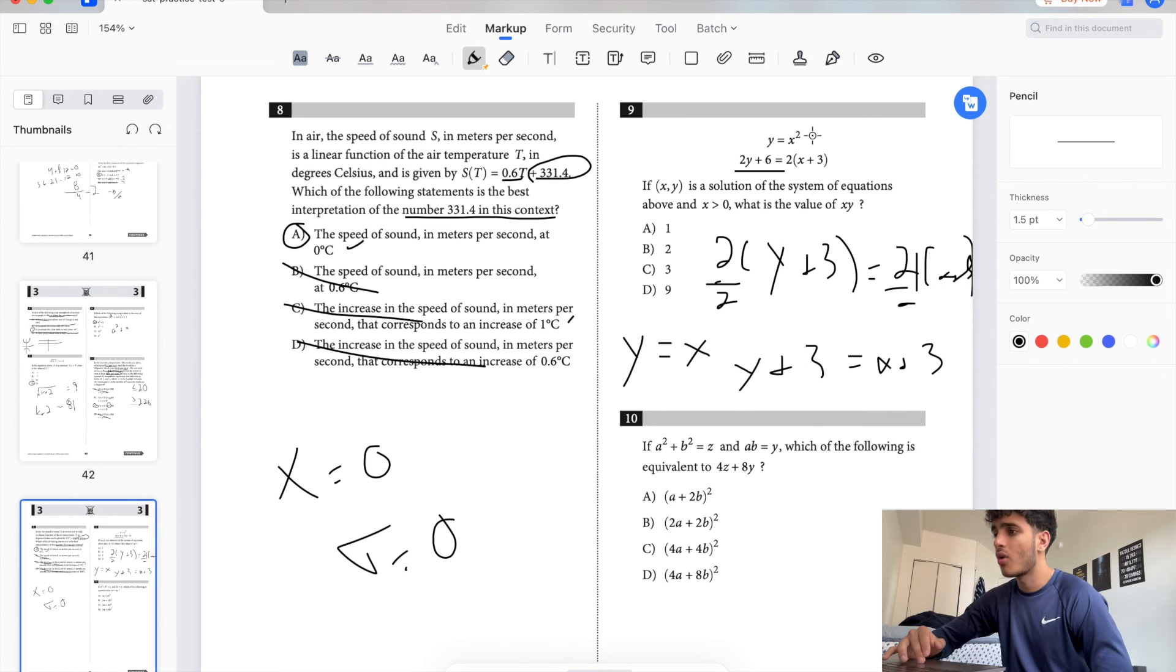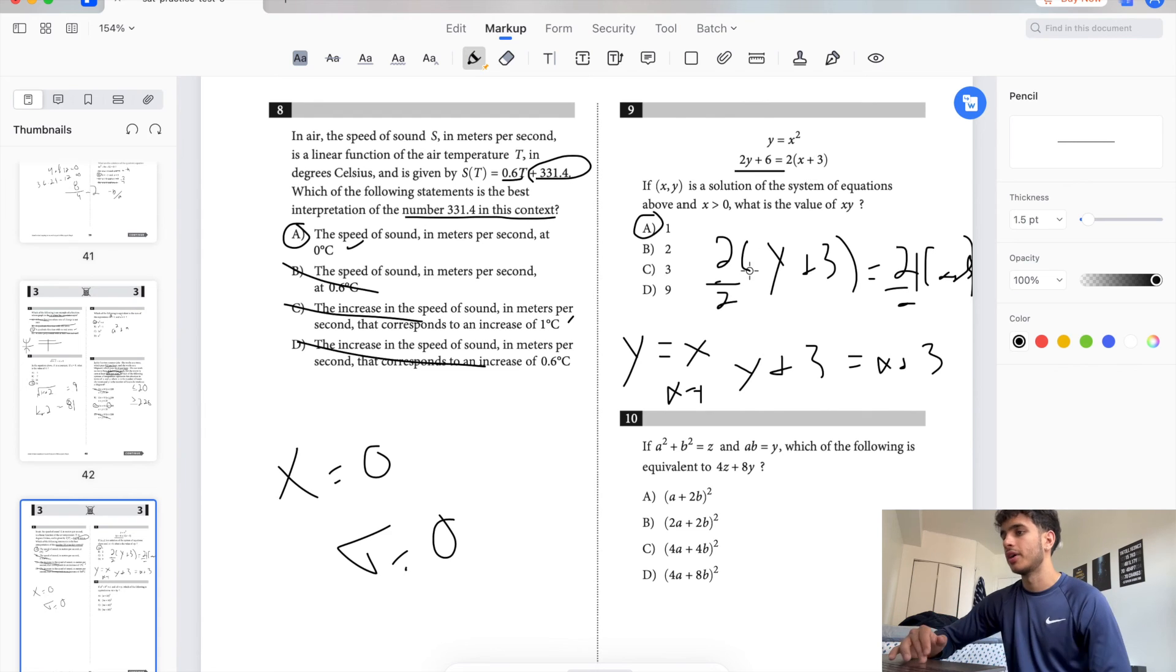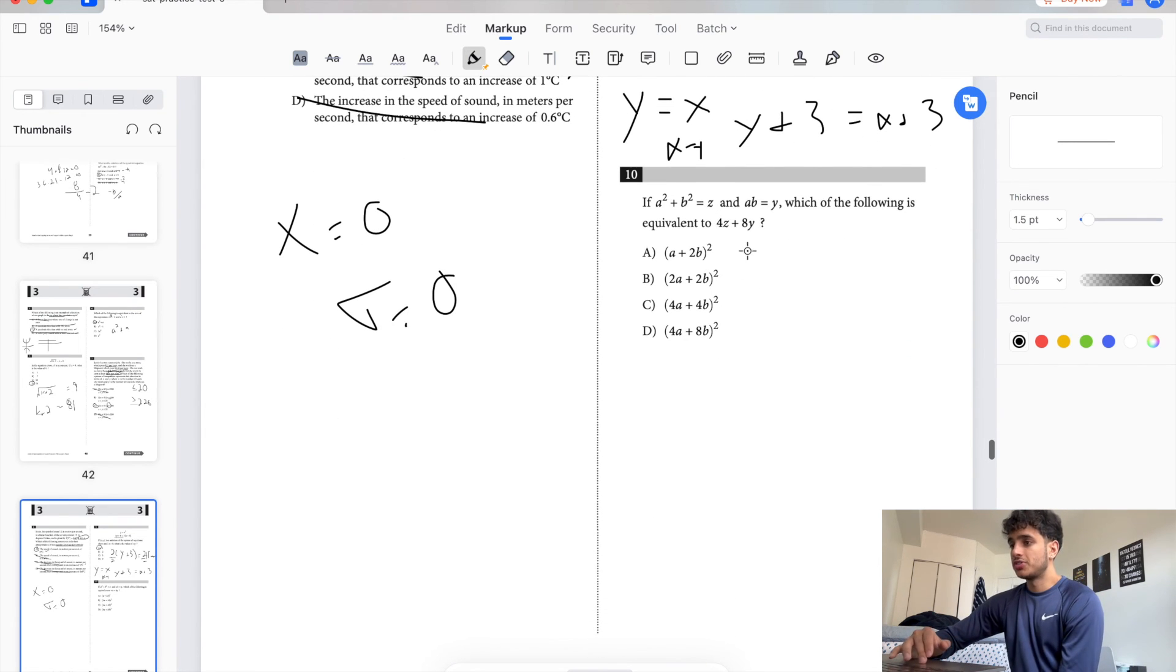So y equals x, and y equals x squared, that must mean that A is the answer. Because let's say x is 1. If you plug in 1 to here, you get y is 1 as well, and 1 times 1 is 1. Let's see if both are actually 1. So let's say if y and x are 1. Plug in 1 here, you get 2 plus 6 is 8. Plug in 1 here, you get 8. So yeah.